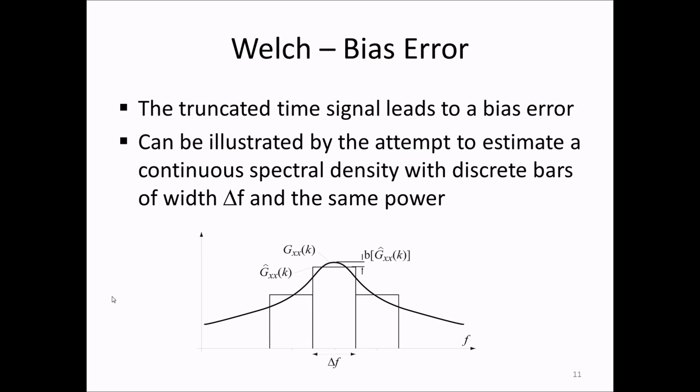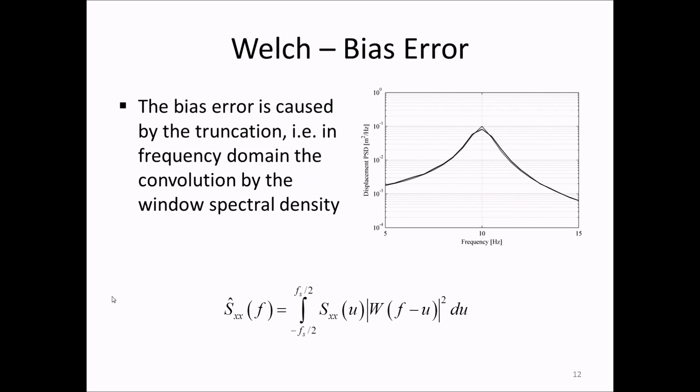The bias error can also be illustrated as an effect of the fact that we approximate a continuous function, the true PSD, with bars of width delta f, having the same power within the frequency width delta f. Naturally, as indicated in the picture here, this will produce a negative bias error at peaks as long as the width delta f is significant compared to the width of the peak. We can also describe the bias error as the result of the convolution of the true PSD of the signal with the Fourier transform squared of the window function. The window function is squared because the PSD estimate is formed by taking the magnitude squared of the DFT. This figure shows the true PSD of a vibration signal on a resonant structure with a peak and the result of the truncation, which is slightly lower peak value and a rounder peak.